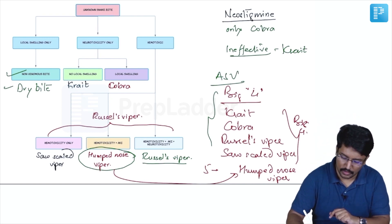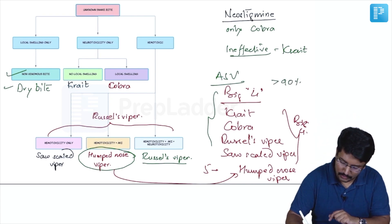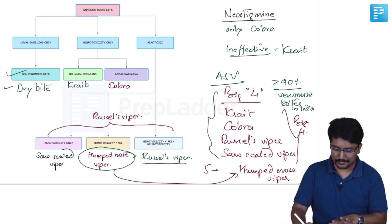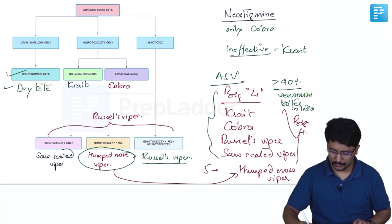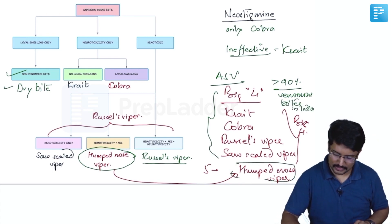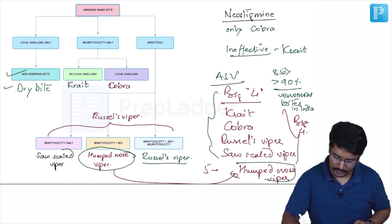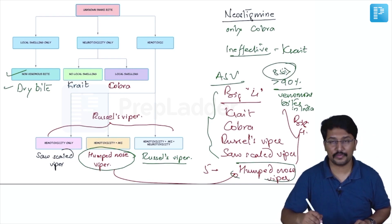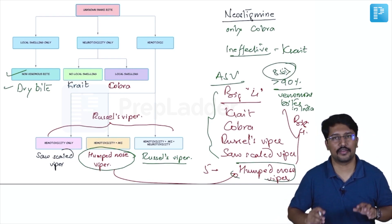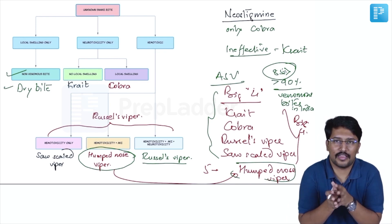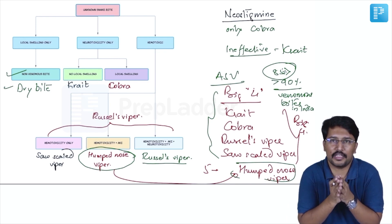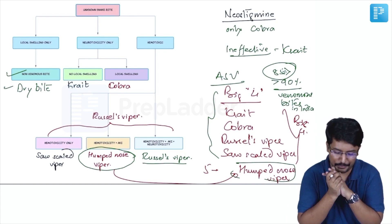These five species are responsible for more than 90 percent of venomous bites in India. If you set the hump-nosed Viper aside, still more than 85 percent of venomous bites are because of the Big Four. The ASV we routinely use is effective against 85 percent of poisonous snake bites in India.